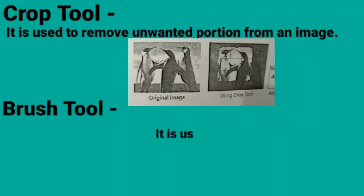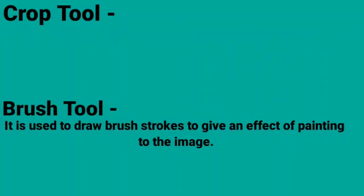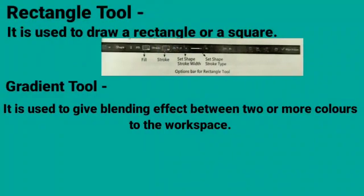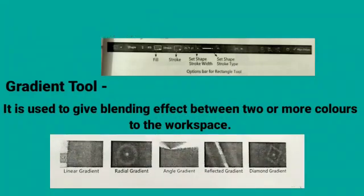Crop Tool: It is used to remove unwanted portions from an image. Brush Tool: It is used to draw brush strokes to give an effect of painting to the image. Rectangle Tool: It is used to draw a rectangle or a square. Gradient Tool: It is used to give a blending effect between two or more colors to the workspace.